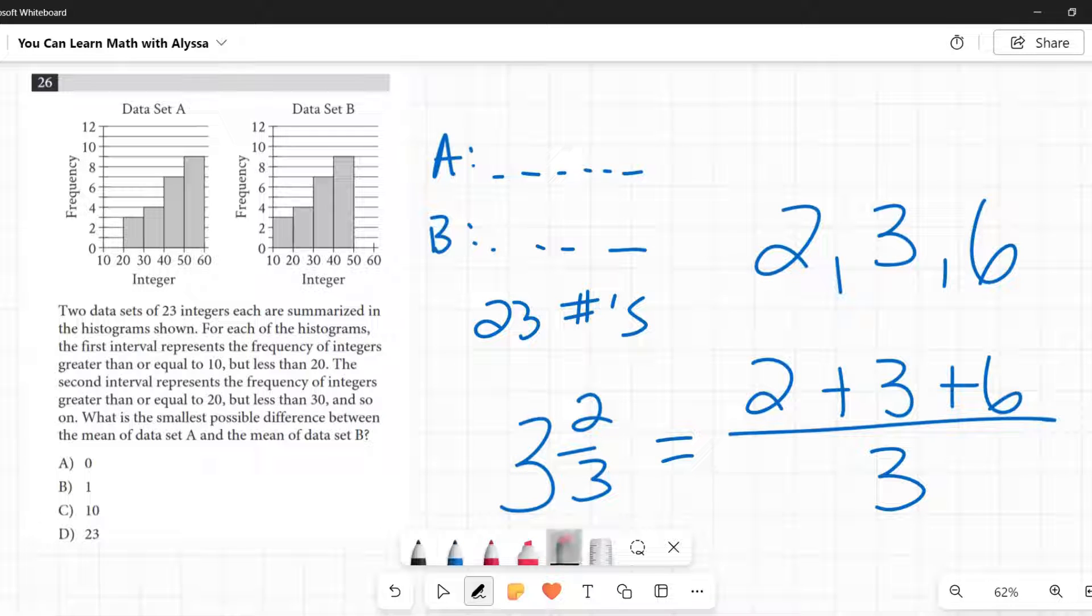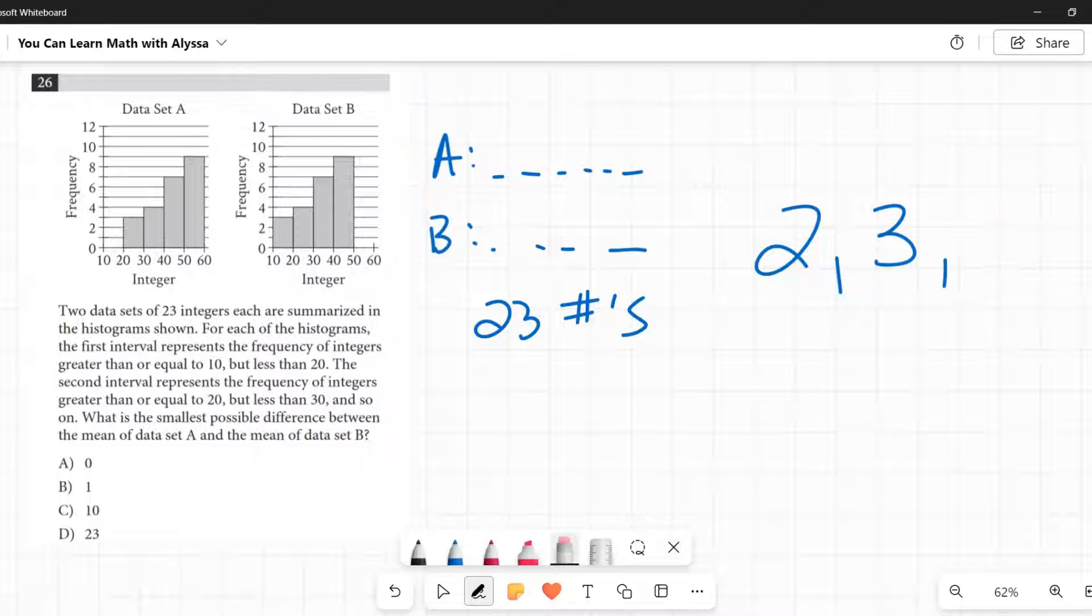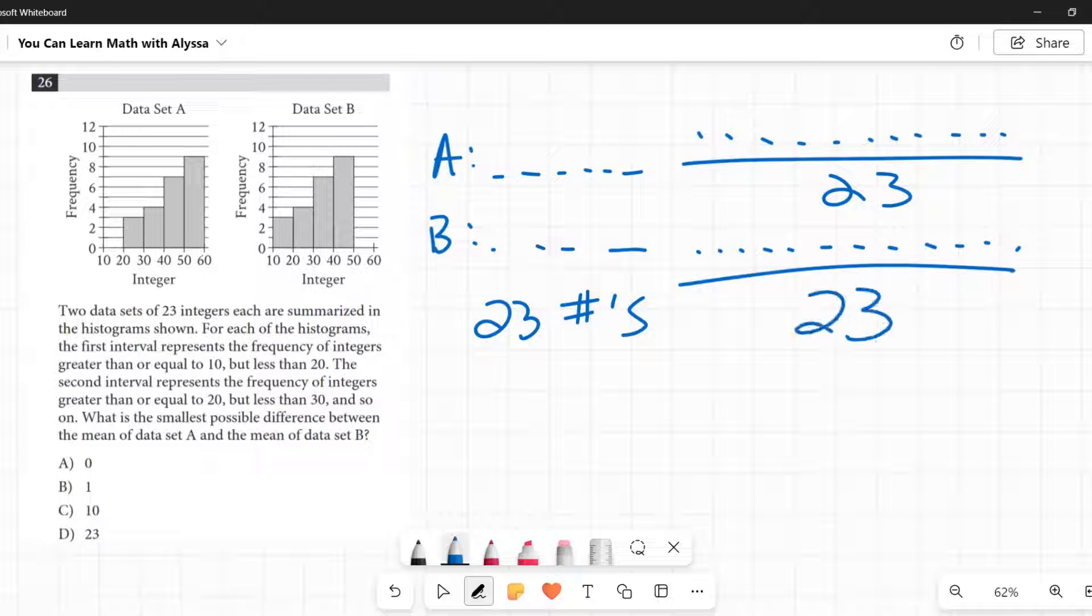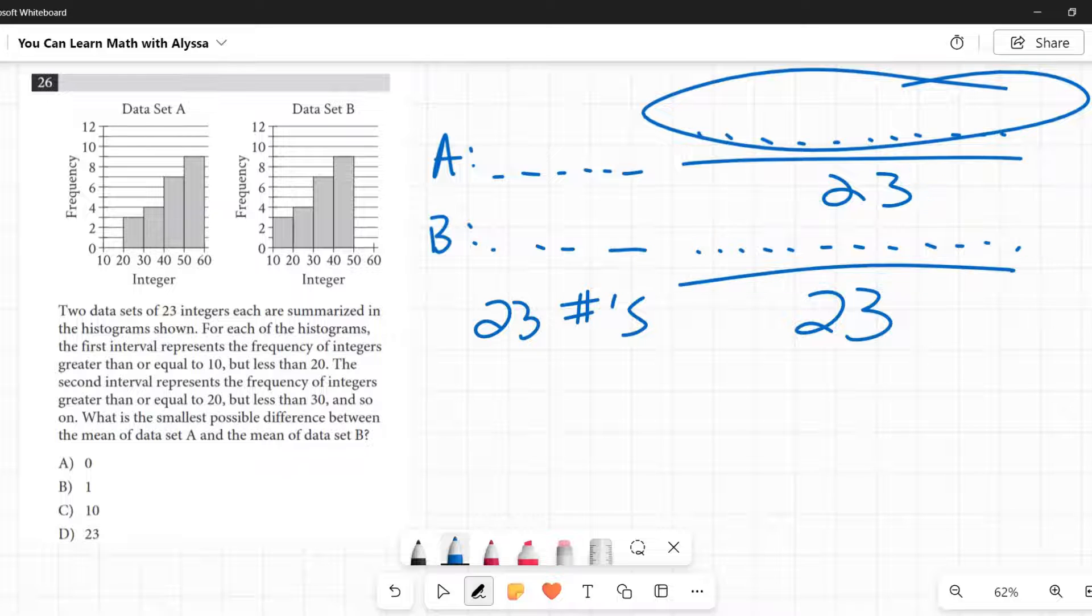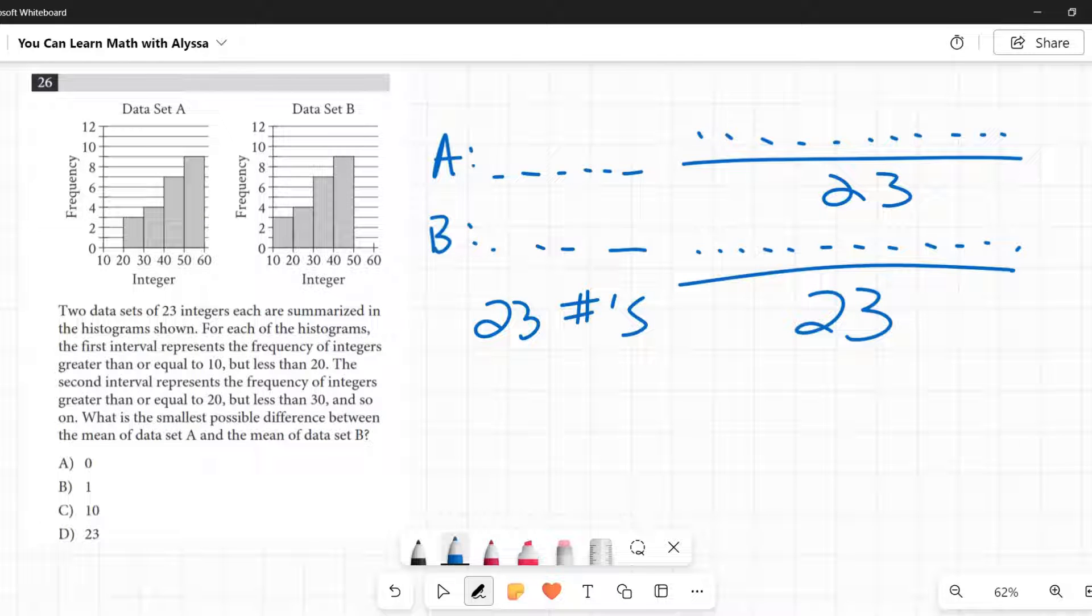That's how we find a mean. So for these data sets, to find the mean, for A, I'm going to take all these 23 numbers, add them all together, and then divide by 23. And same with B, I'm going to add those 23 numbers together and divide by 23. And they're wanting me to know what's the smallest possible difference. So I want these two sums on top to be as close as humanly possible. How could I do that?